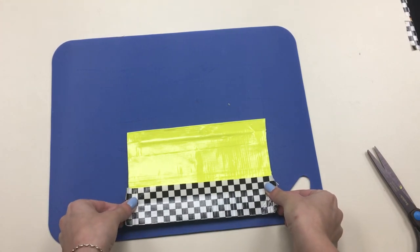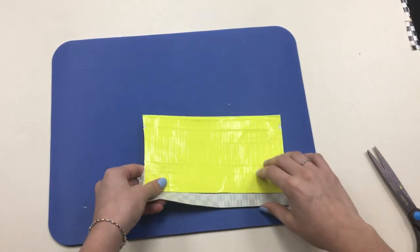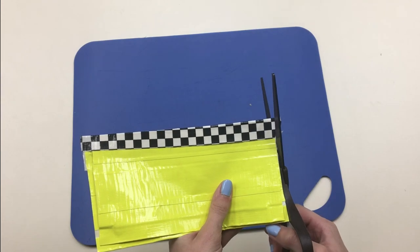Take a piece of duct tape and put it along the bottom of the bag. Turn it around to create a nice tight bottom seal. Then trim the edges.